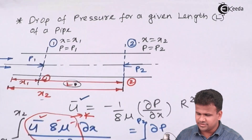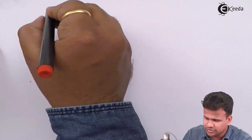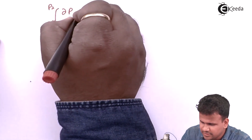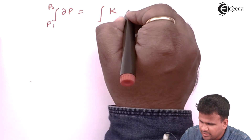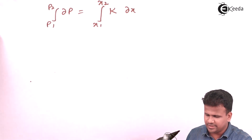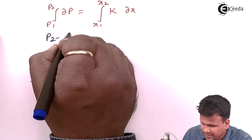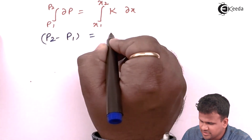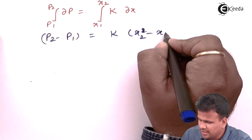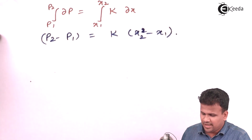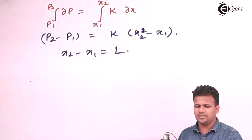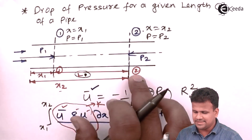Let us integrate: the integral from p1 to p2 of dp equals the integral from x1 to x2 of k dx. When we integrate, we get p2 minus p1 equals k times (x2 minus x1). We know that x2 minus x1 equals the length L of the pipe between section 1-1 and section 2-2. So, let us substitute that value of L into the equation.